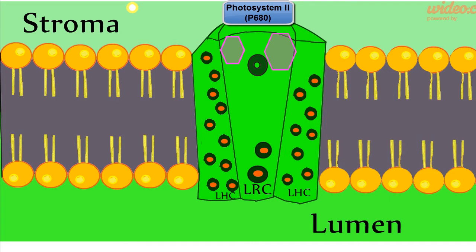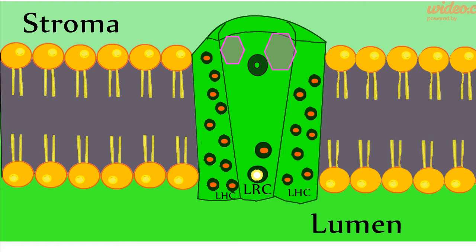The process starts with a photon of light entering the light-harvesting complex of photosystem II. The photon will be absorbed by the chlorophyll molecules, which will then begin to vibrate and transfer the energy through a process called resonance energy transfer. This energy will be transferred to the special chlorophyll molecules in the light reaction center. For animation purposes, the photon is shown as energy jumping from one chlorophyll molecule to the next until it reaches the light reaction center.